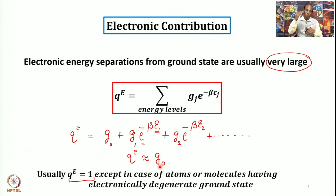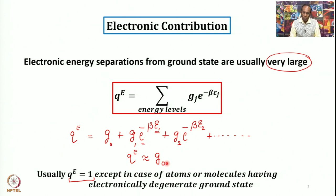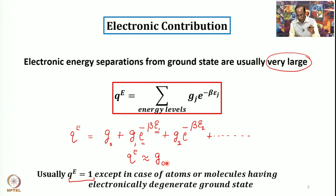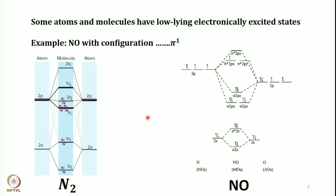There are no complicated approximations here — you simply expand the sum. Depending on the energy of the first excited state, which is usually very high, you will generally get a value of G0. But in some cases there may be a lower-lying first excited state, and in that case you can extend the sum to the second term: G1 times exponential(−βE1). One such example is nitric oxide, NO, which has low-lying electronically excited states.